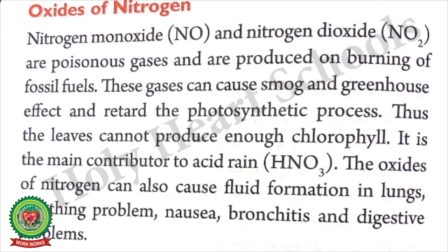Oxides of nitrogen — nitrogen monoxide and nitrogen dioxide — are poisonous gases produced by burning of fossil fuels, mainly coal and petroleum. These gases can cause smog (a mixture of smoke and fog) and the greenhouse effect, and retard the photosynthetic process in green plants. Thus the leaves cannot produce enough chlorophyll. Nitrogen oxides are a main contributor to acid rain and can also cause fluid formation in lungs, breathing problems, nausea, bronchitis and digestive problems.